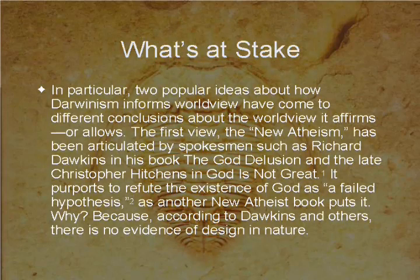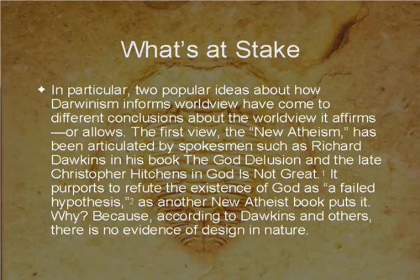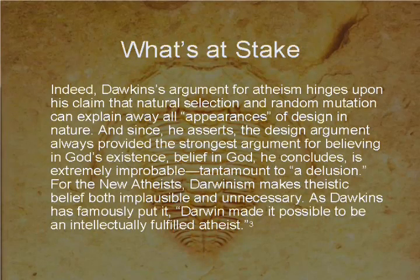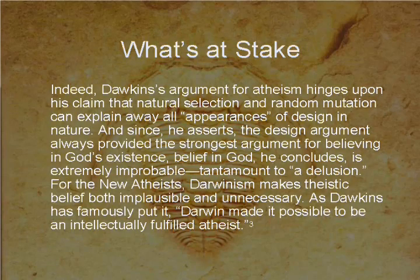The first view, the new atheism, articulated by Richard Dawkins in The God Delusion and the late Christopher Hitchens in God is Not Great, purports to refute the existence of God as a failed hypothesis — because, according to Dawkins, there is no evidence of design in nature. Dawkins' argument for atheism hinges on the claim that natural selection and random mutation can explain all appearances of design. Since he asserts the design argument always provided the strongest argument for believing in God, belief in God, he concludes, is extremely improbable — amounting to a delusion. Darwin, as Dawkins famously put it, made it possible to be an intellectually fulfilled atheist.